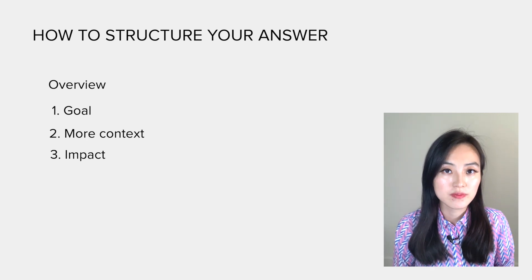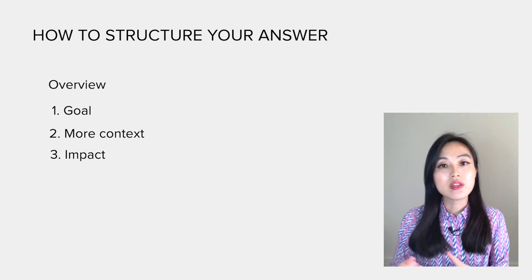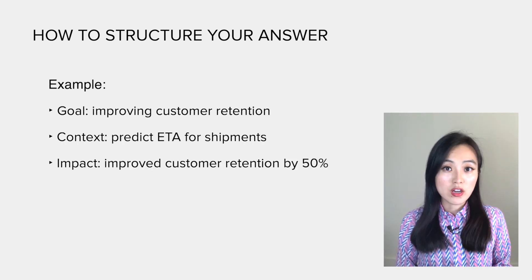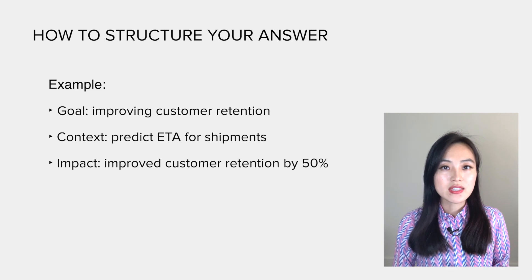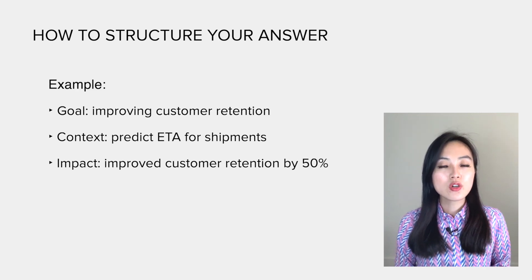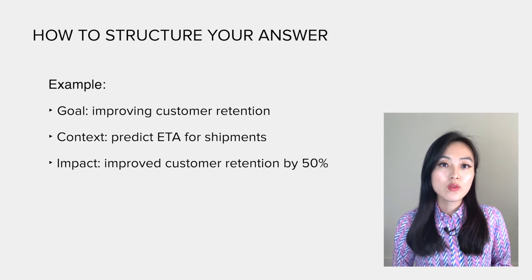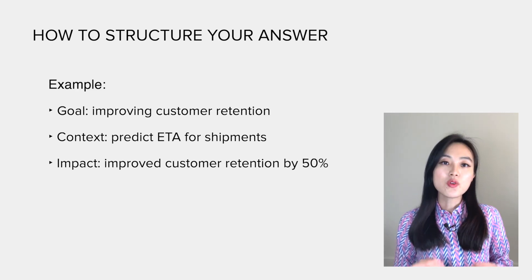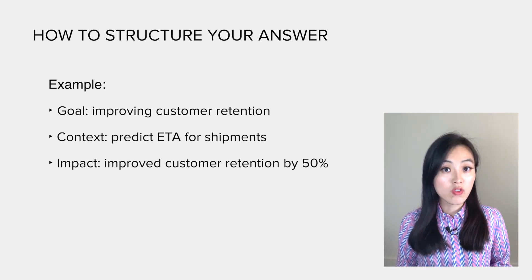Next, the most important part is the impact of the project — what you, your team, or your company achieved by doing it. It's crucial to tell the numbers. For example: 'The most interesting data science project I did last year aimed at improving customer retention by delivering a new feature on our app — predicting the estimated time of arrival for shipments. It was a six-month project and we improved customer retention by 50%.'